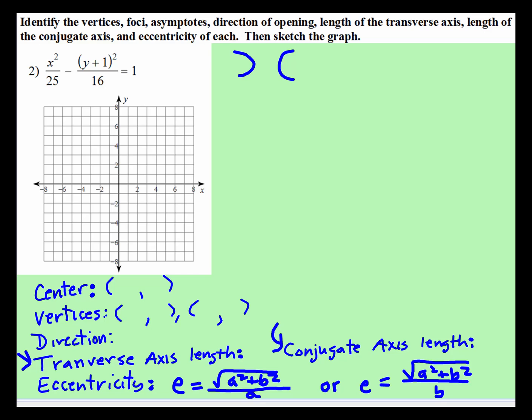When we look to find the center, there's not a set of parentheses with the x value, so we know the x value will be 0. In the parentheses with the y is 1, to zero that out would be negative 1. So at 0, negative 1 will be the center of the rectangle of the hyperbola.